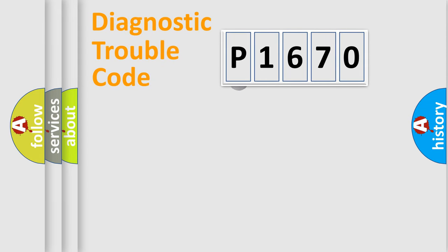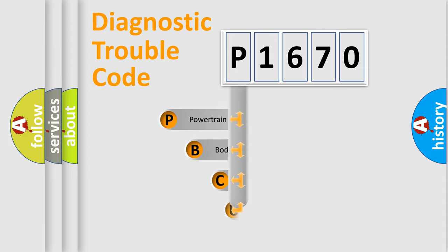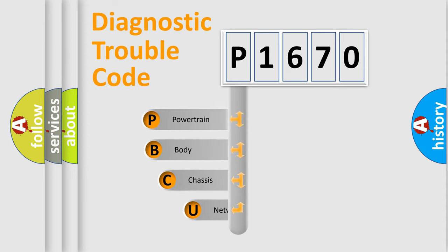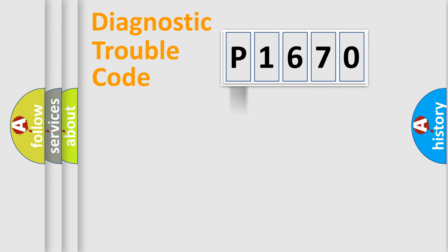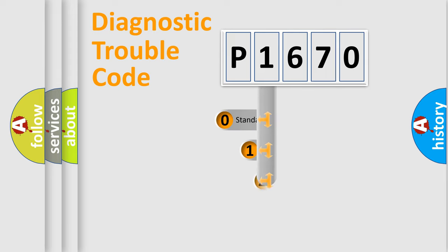First, let's look at the history of diagnostic fault code composition according to the OBD2 protocol, which is unified for all automakers since 2000. We divide the electric system of an automobile into four basic units: Powertrain, Body, Chassis, and Network. This distribution is defined in the first character of the code.